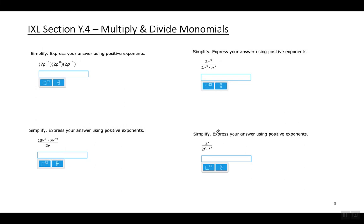Now the examples get slightly more complicated. For the numbers, multiply them together: 2 times 2 is 4, and 4 times 7 is 28. For variable P, add the exponents: negative 1 plus 0 is negative 1, and negative 1 minus 1 is negative 2.